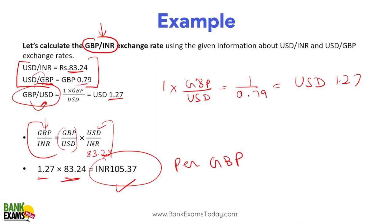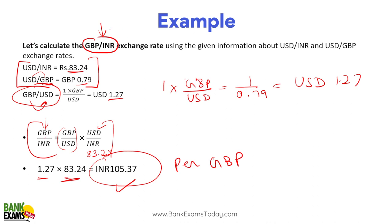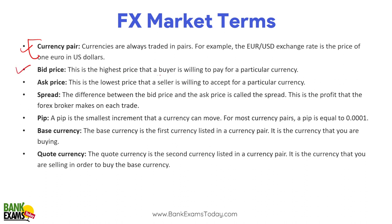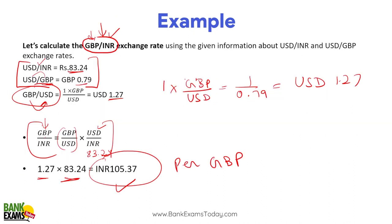It's very important — I have seen similar questions repeated in exams multiple times. Some key terms you need to understand: currencies are always traded in pairs, for example GBP/INR or USD/INR. Bid price is the highest price that a buyer is willing to pay for a particular currency. Ask price is the lowest price that a seller is willing to accept. Spread is the difference between bid price and ask price — this is the profit of the forex broker. PIP is the smallest increment in quotations, most of the times 0.0001. Base currency is the first currency listed in the pair; quote currency is the second.